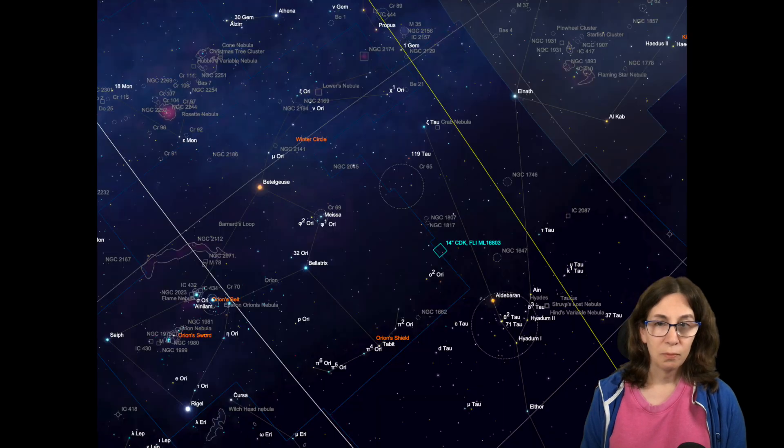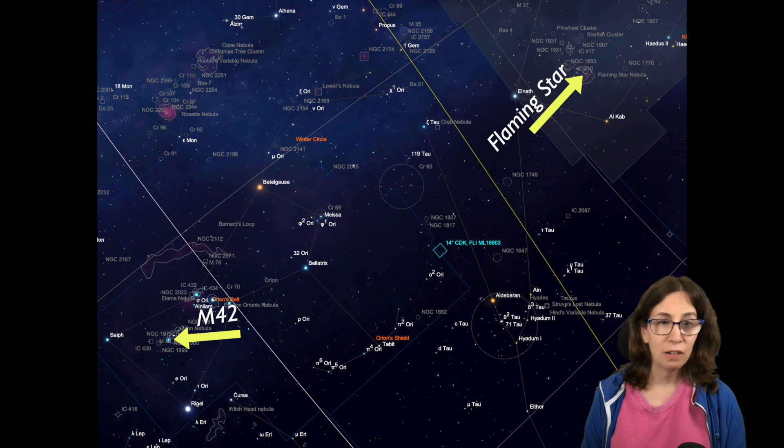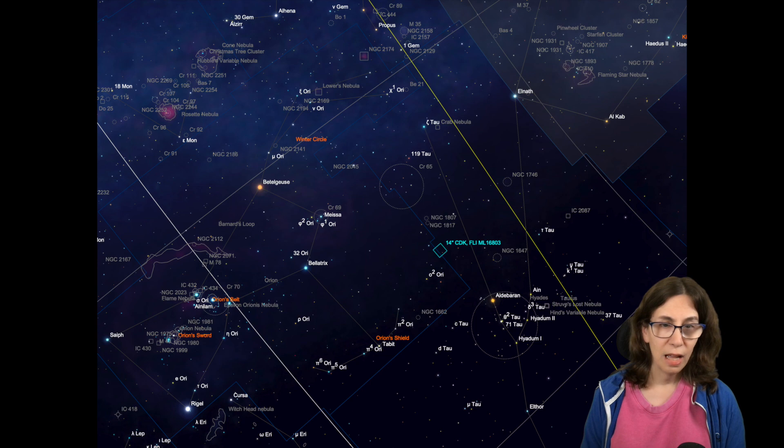But aside from being a bright O-type star, A.E. Aurigae is unusual for another reason. It's a runaway star. It's thought to have been ejected from the area near the trapezium in the Orion Nebula, so it's a long way from its point of origin. And while it is the source of energy that causes both the reflection and emission parts of the flaming star, it won't be there forever since it's just passing through.